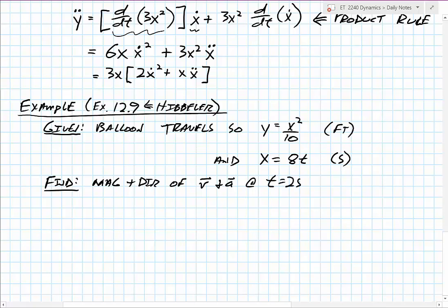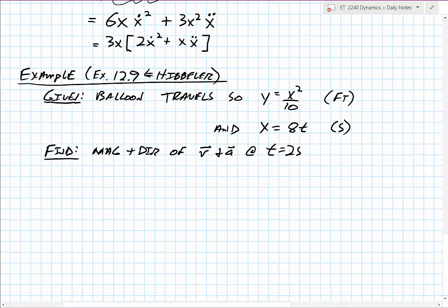Some of you might ask: why not just substitute x equals 8t into y equals x squared over 10, get y as a function of t, and differentiate like before? You can do that and it works. But moving forward in the course, you need to understand the formal approach using the chain rule, because we'll encounter complex problems where substitution isn't possible.